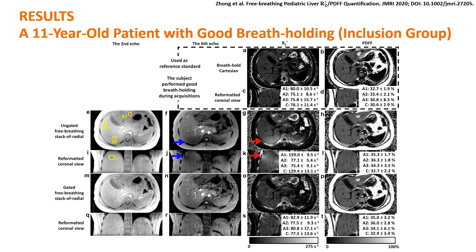The results of an 11-year-old patient who held their breath well during breath-hold acquisitions are shown here. The reference maps from the breath-hold Cartesian acquisition are shown in the two upper rows, and we had observations similar to the previous example.